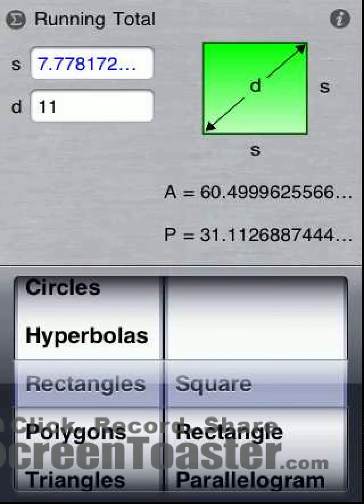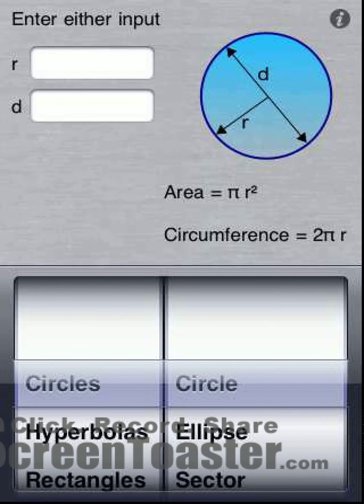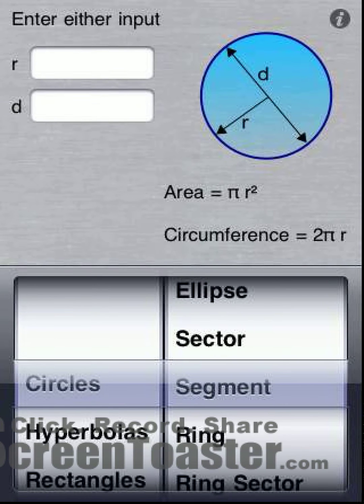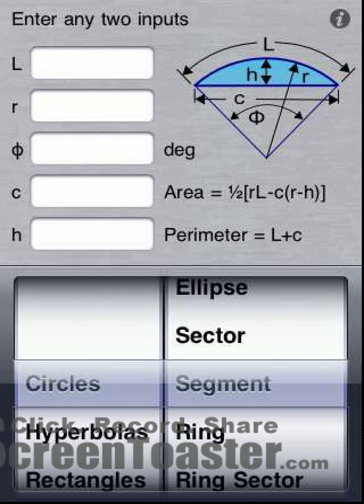Let's now select the segment of a circle. Select the circles category. And let's select the circle segment. This time we are instructed to enter any two inputs.